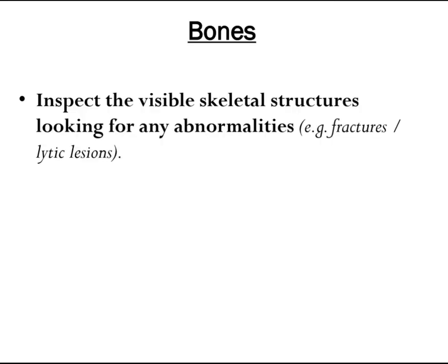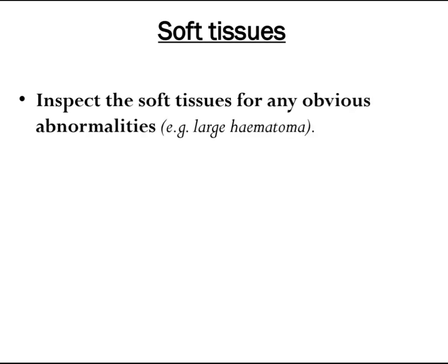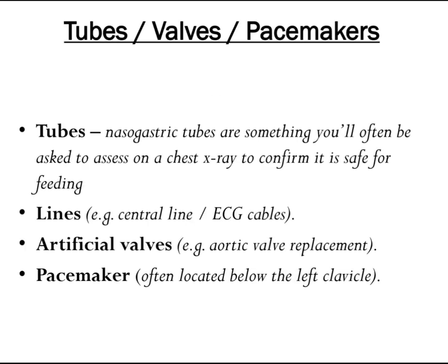Inspect the visible skeletal structures for any abnormalities such as fractures or lytic lesions. Inspect the soft tissues for any obvious abnormalities such as a large hematoma. Also assess for tubes and devices: nasogastric tubes are something you'll often be asked to assess to confirm it is safe for feeding. Also look for lines such as central lines, ECG cables, artificial valves such as aortic valve replacements, and pacemakers, which are often located below the left clavicle. That's all about how to read a chest x-ray — thank you.